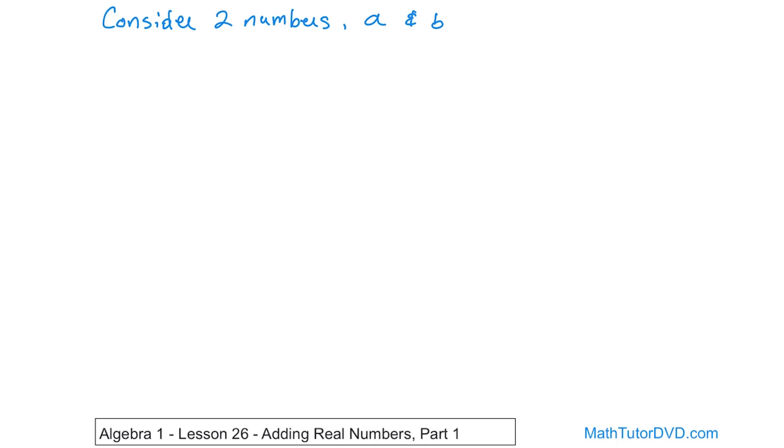So what we're going to do is construct a little table here. We'll have the number A that we're going to add to the number B, and we have a couple of different cases we need to consider. What if A is positive and B is negative, for instance? What if A is positive and B is positive? What's going to happen?